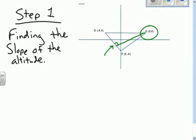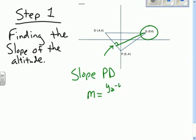So to find the slope of that line, we need to find the slope of side PD. So if you remember right, the slope formula is y2 minus y1 over x2 minus x1.